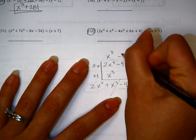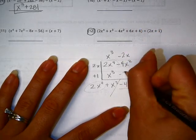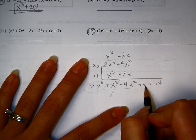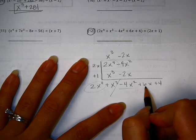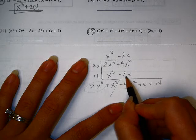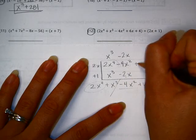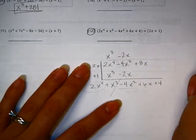So this would be negative 2x, negative 2x here. I need it to be a 6. But right now it's a negative 2. So I need to have a positive 8 that would make that happen.